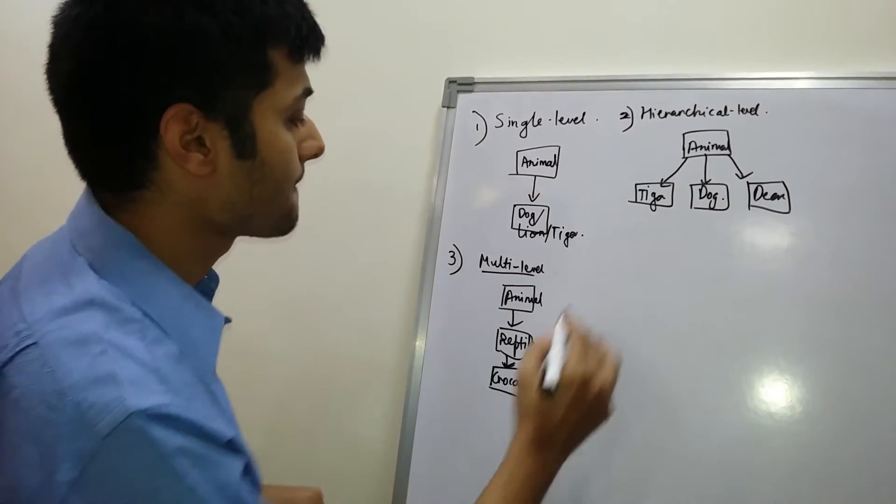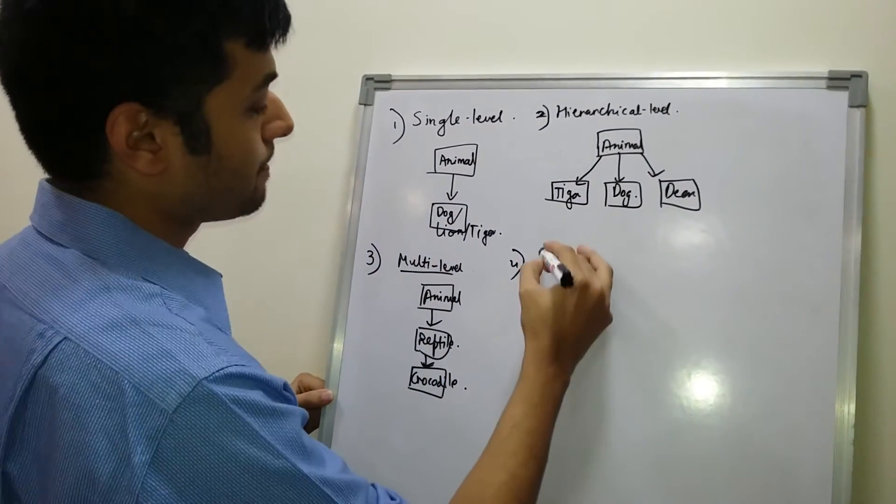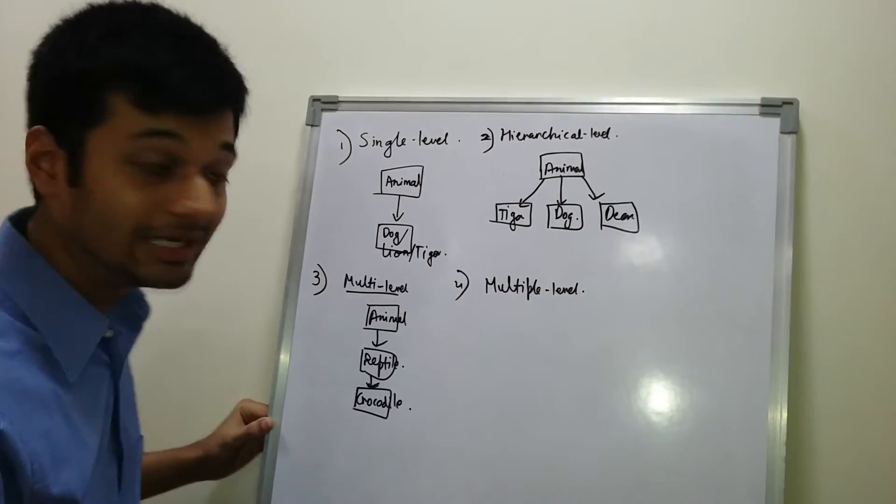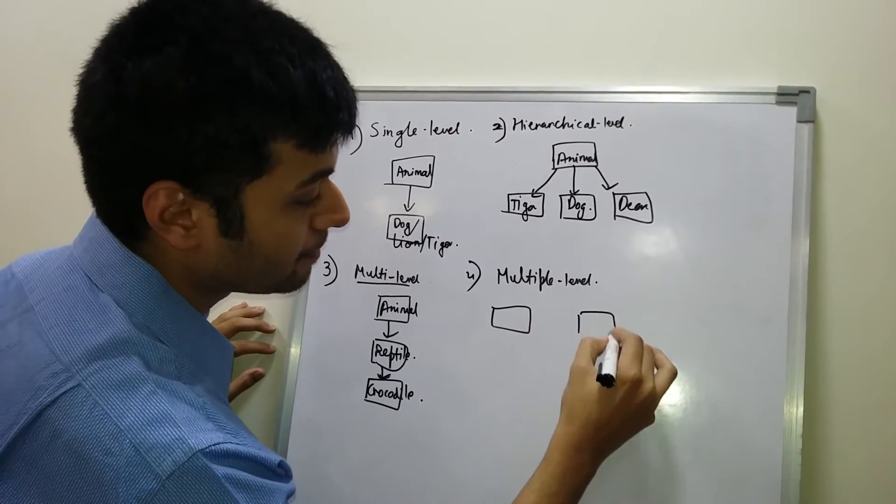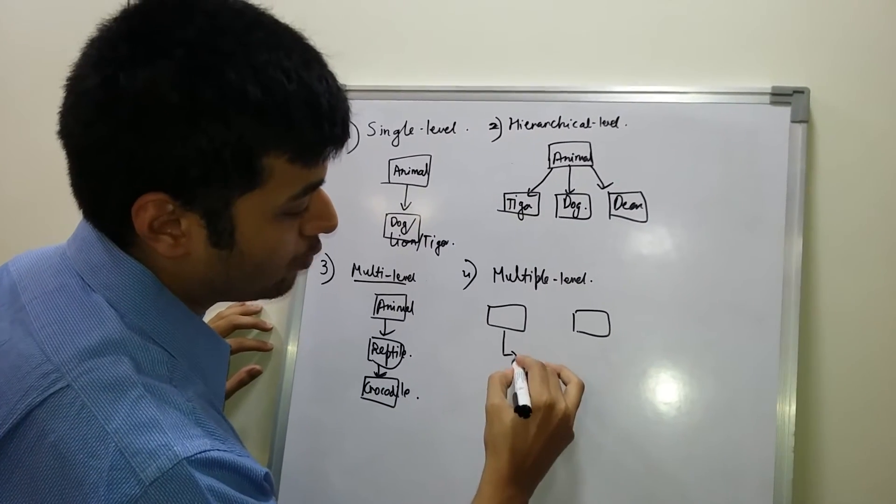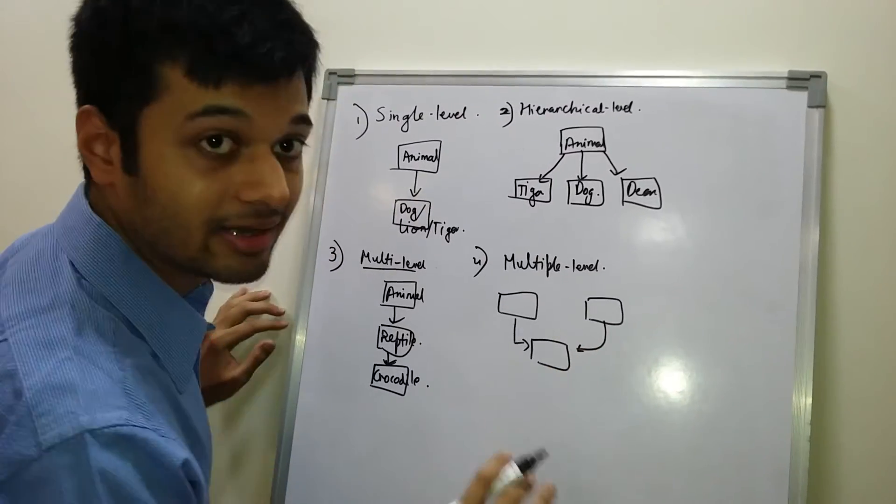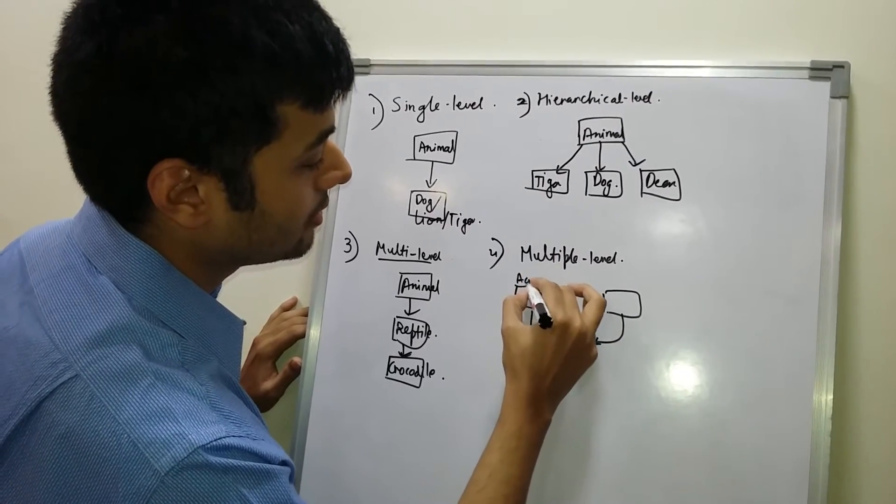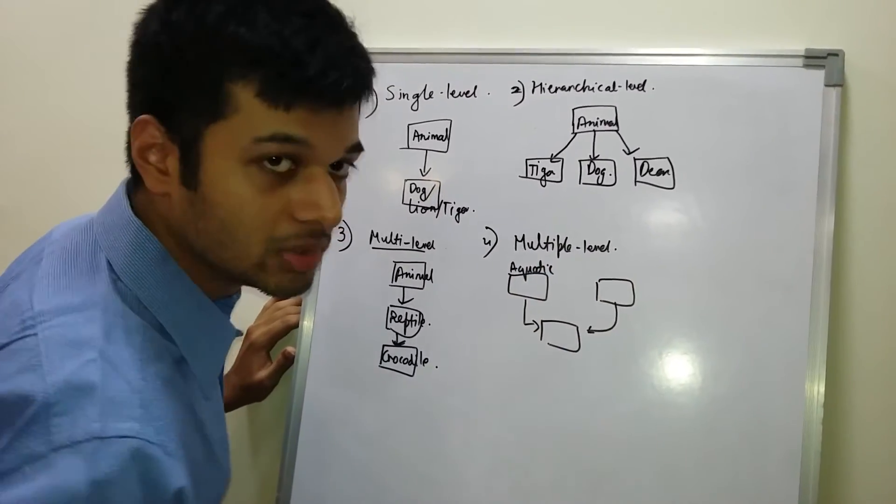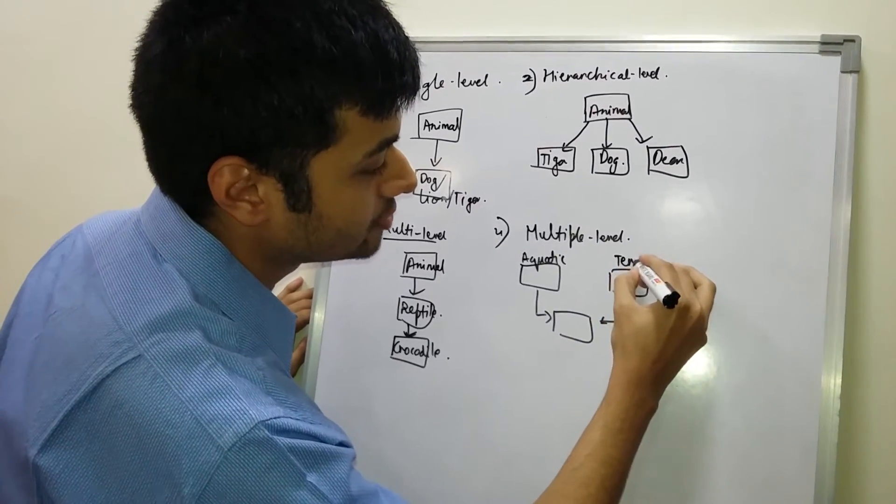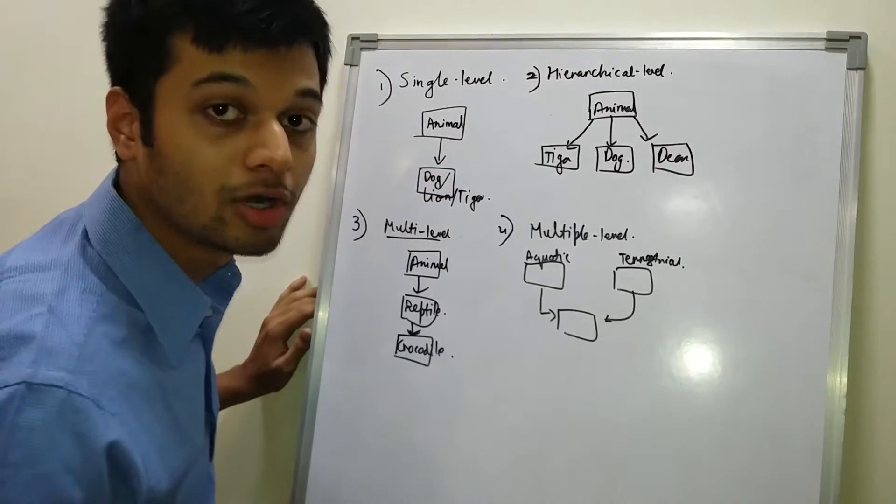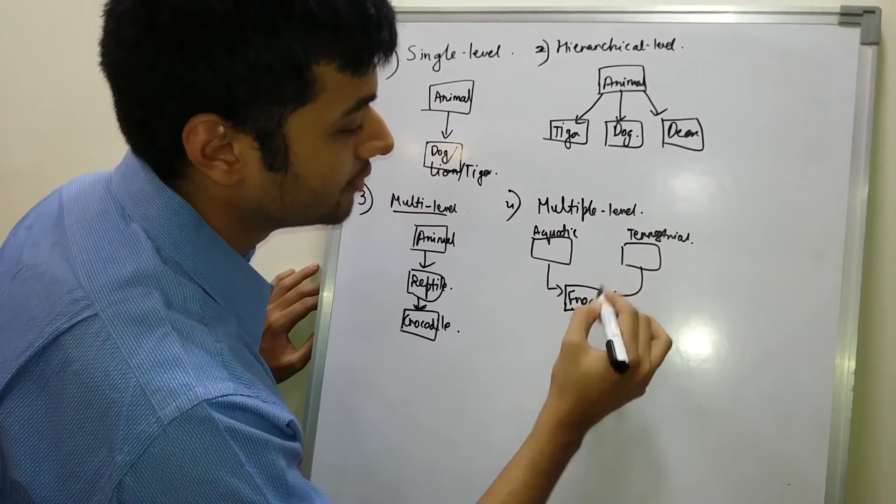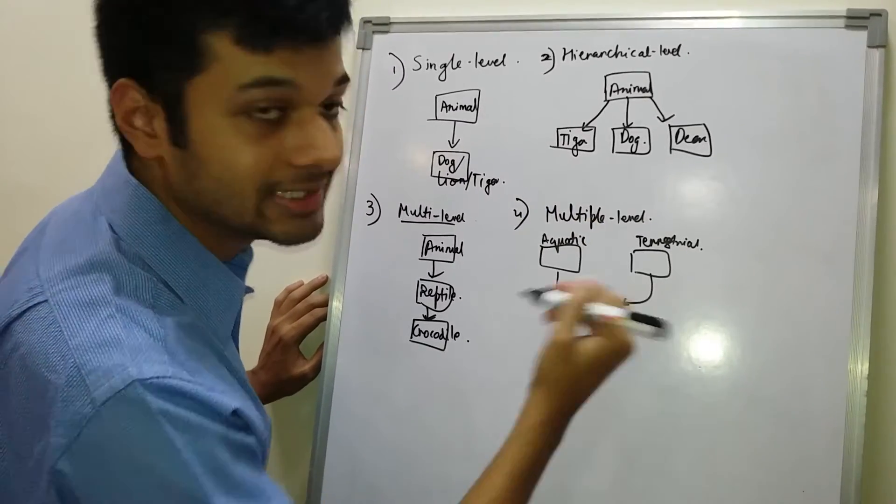The fourth one is multiple inheritance. In multiple inheritance, there are two base classes and one common class which has been derived from these two base classes. For example, we can take Aquatic, which lives in water, and Terrestrial, which lives on land. So a Frog could be an example which lives both in water as well as on land.